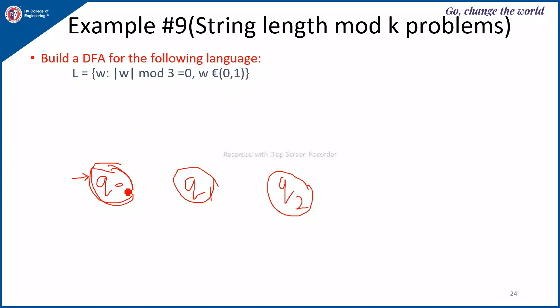Here, since the alphabet is 0, 1, whether it is 0 or 1, one single character will take the length of the string to be 1. So the machine should go to the state Q1 representing that currently the length of the string is 1.